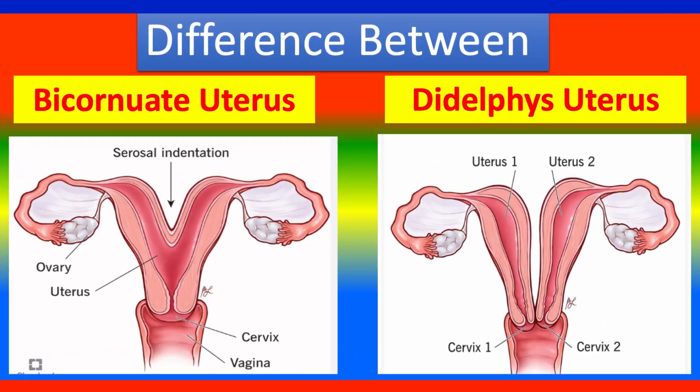Detailed differences between bicornuate uterus and uterus didelphys, explained point by point, and then in a clear comparison table — good for theory, viva, and exams.